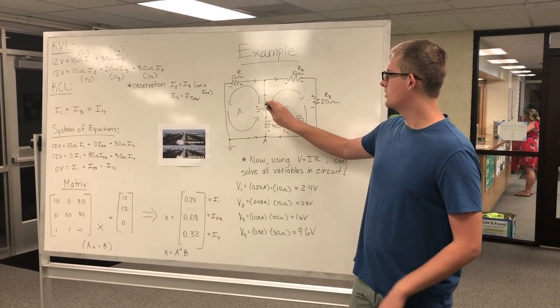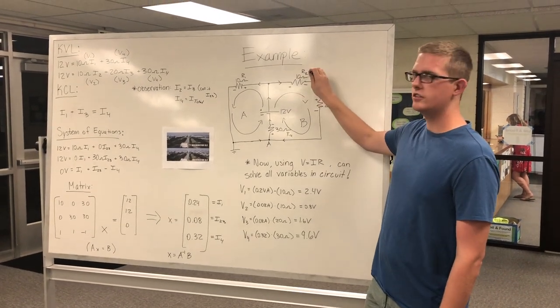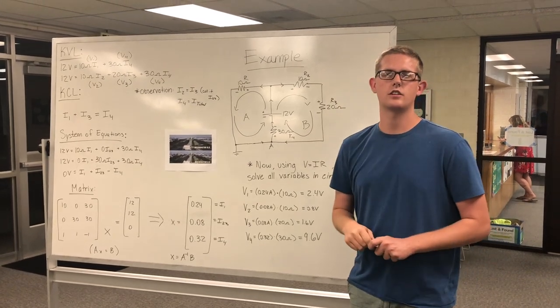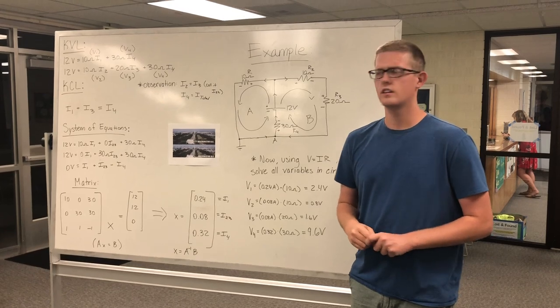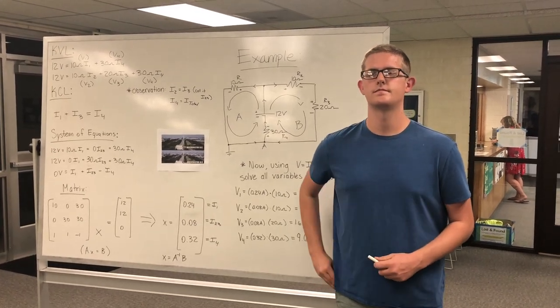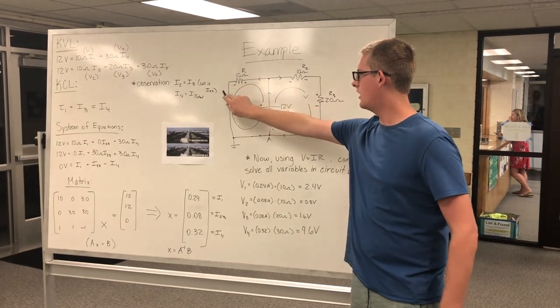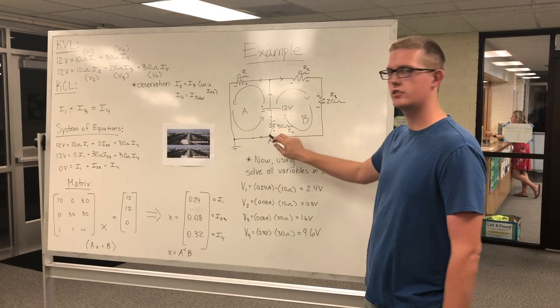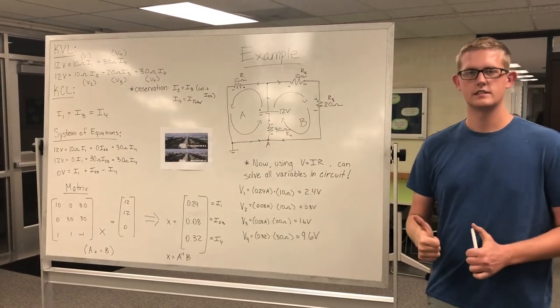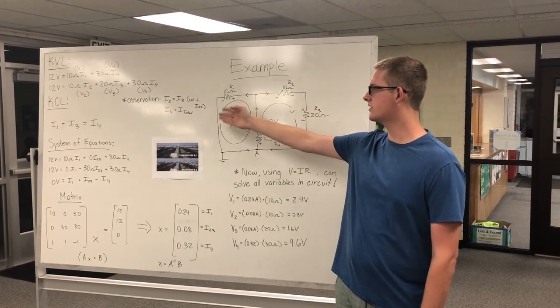Can anyone create an equation starting at 12 volts for loop B using Kirchhoff's voltage law? For loop B, the voltage rise is 12 volts, and the voltage drop is equal to the voltage drop across R2, the voltage drop across R3, and the voltage drop across R4. Now let's use KCL for node A. The current going through R1 plus the current going through R3 is equal to the current going through R4. Another observation: the current going through R2 is equal to the current going through R3, so we can call it I23.